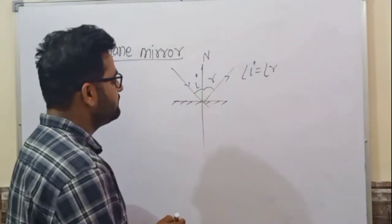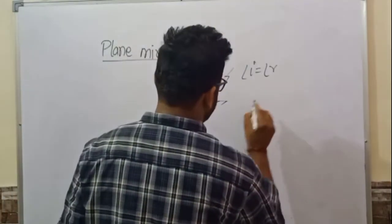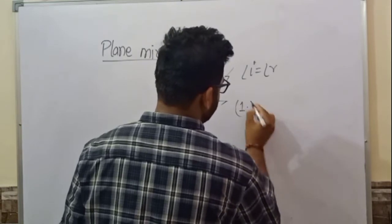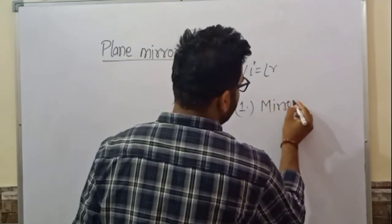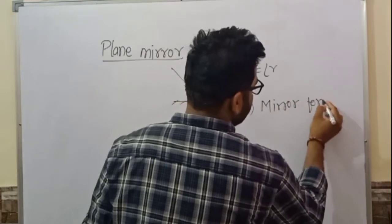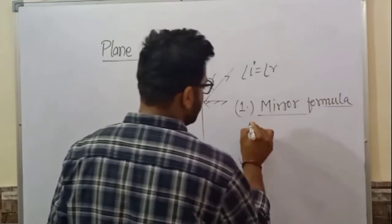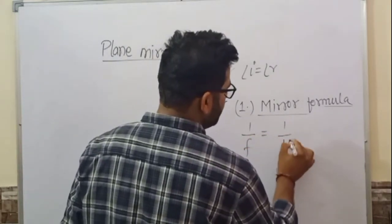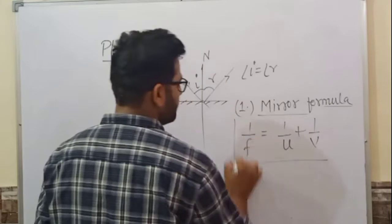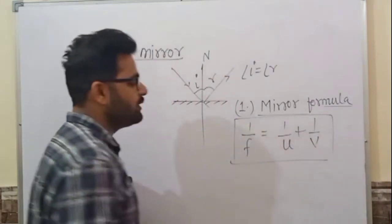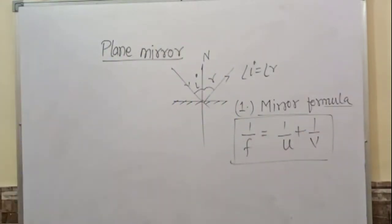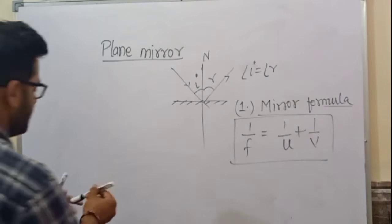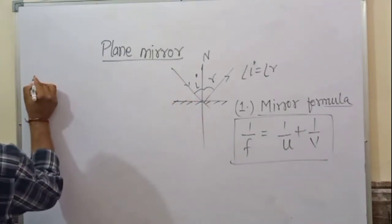So students, let me tell you some properties of plane mirror. First, note down the mirror formula: 1/f = 1/u + 1/v. Here f is the focal length, u is the distance of the object, and v is the distance of the image — that is, the position of the object and position of the image.